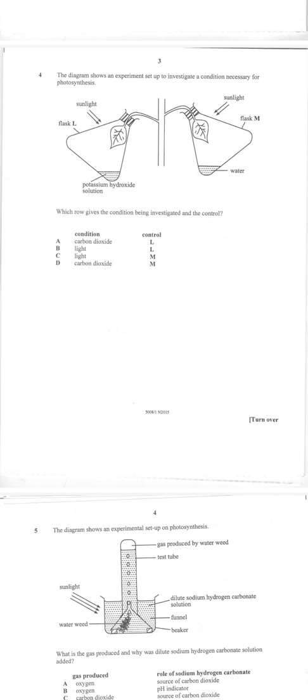Question four: we have an experiment set up with sunlight and potassium hydroxide solution, and the other flask has no potassium hydroxide solution. The question says which role gives the condition being investigated in the control.